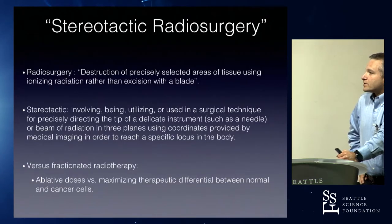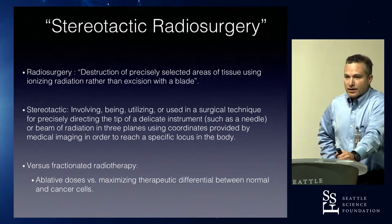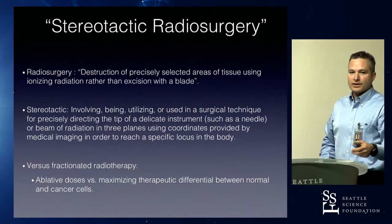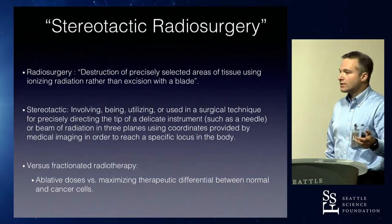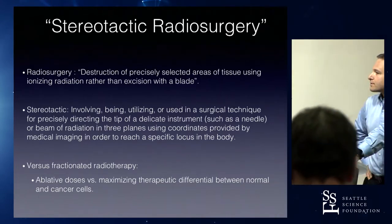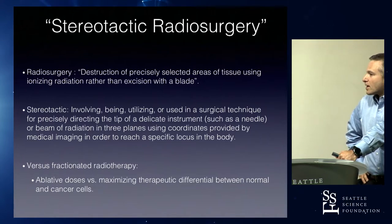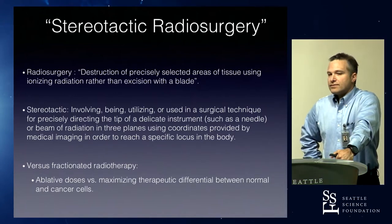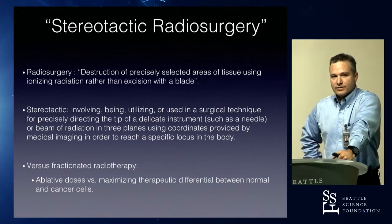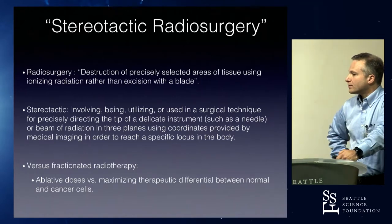What does stereotactic radiosurgery mean? Radiosurgery is fairly intuitive — it's destruction of tissue using radiation instead of a blade, using extremely high doses. This is called ablative radiation, also known as SABR — stereotactic ablative radiation. You're essentially destroying anything within the zone where the beams converge. Stereotactic simply means using a three-dimensional coordinate system to localize something. In comparison, fractionated radiation means giving a little bit of radiation each day, allowing normal tissues to recover between treatments.